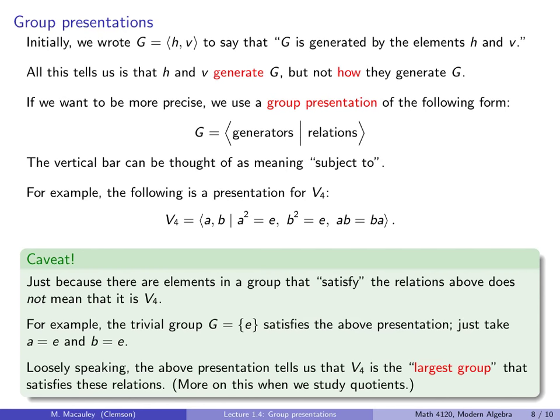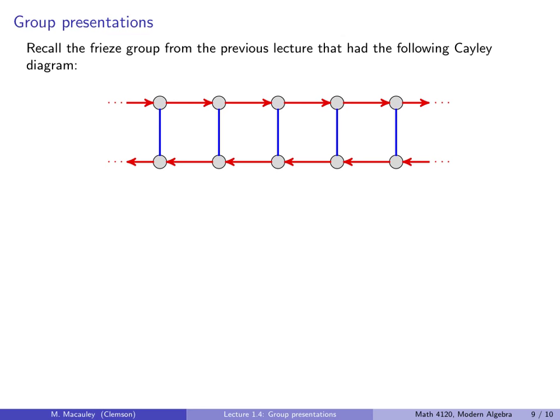Here's an example from the previous lecture. Recall the frieze group that had the following Cayley diagram. Now we actually saw several frieze patterns that had this diagram, so we don't really know which one it is. One of them had the red arrows as the glide reflections, and the blue arrows as the horizontal reflections, that is the reflections about a vertical axis. Although it could have been one of the several other frieze groups that had the same Cayley diagram. So here's one presentation of this group. G is generated by T and by F. And F squared equals the identity, and TFT equals F.